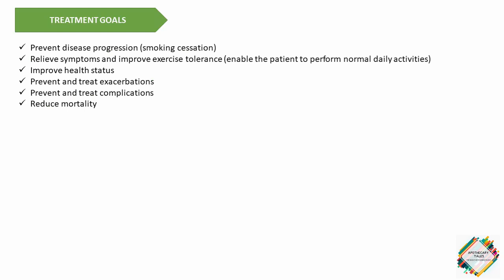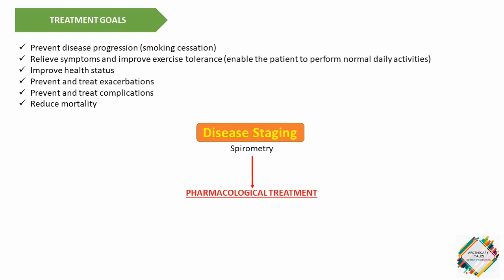Regarding pharmacological treatment, therapy is usually based on disease staging, which is determined by spirometry. Once disease staging is done, drug therapy is initiated. Short-acting anticholinergics and beta-agonists, alone or in combination, are the most commonly used initial agents.